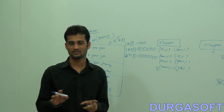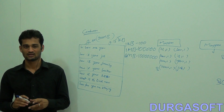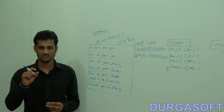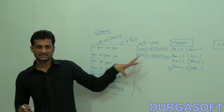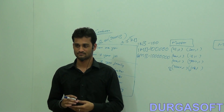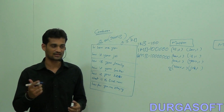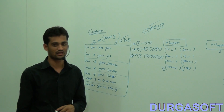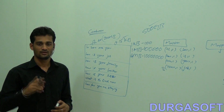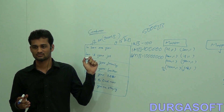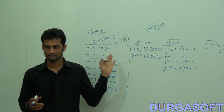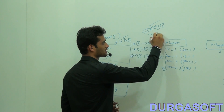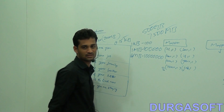Hadoop is highly recommended for working with huge datasets, not small datasets. For big data, the file size should be minimum in GBs. Consider we want to process 500 GB of data — how many 64 MB blocks will there be? For 1 GB there are about 15 blocks, so for 500 GB that's 500 × 15 = 7,500 blocks.